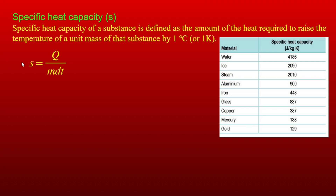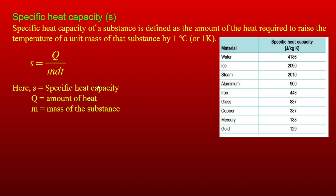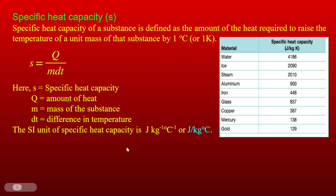We have the specific heat capacity formula: s equals q divided by m times dt. Here q is the amount of heat, m is the mass, and dt is the change in temperature. The unit of specific heat capacity is joules per kilogram per degree Celsius.